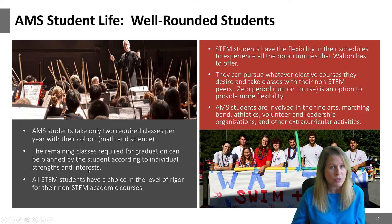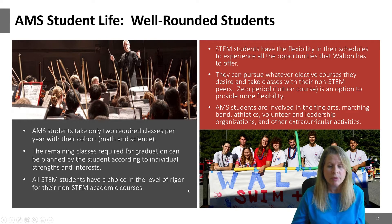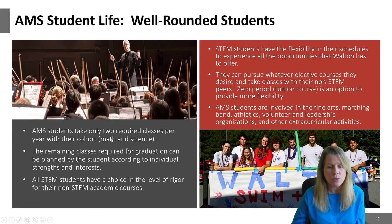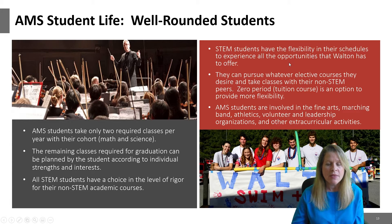If you're interested in a language, you can pursue that all four years. If you have an interest in orchestra, you can pursue that all four years. You have some latitude in your schedule, since we aren't magnet, to take the classes you want. Also, those other four non-STEM classes you're free to take with your non-STEM peers — you won't be segregated. If you choose Walton STEM Academy, you'll be taking classes with non-STEM peers, giving you a nice exposure to the whole high school experience and everything Walton has to offer.